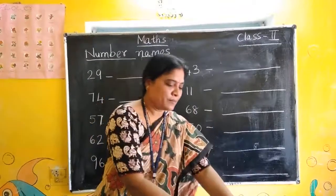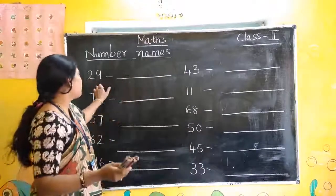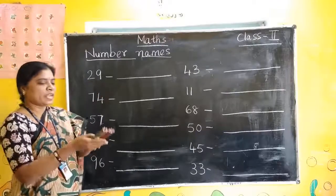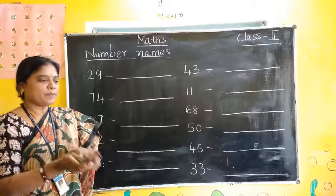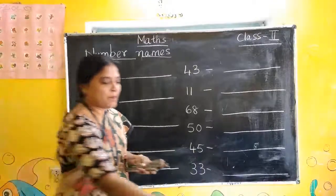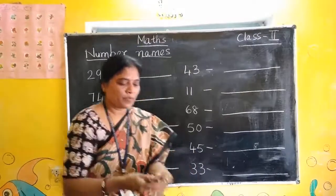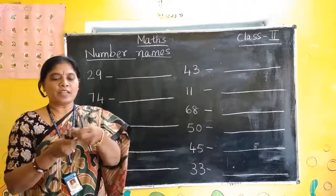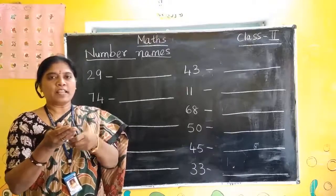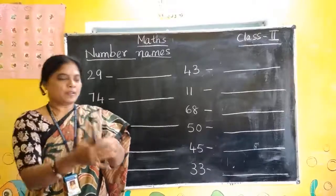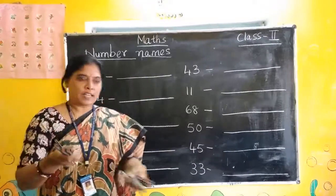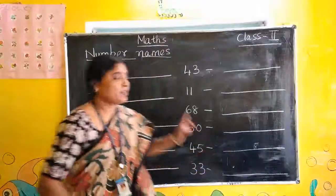Here look at the board. Some numbers. What is this number? 2, 9 — 29. So how many? 2 sets of 20, and 9 more pencils we have to take. 20 plus 9: count 1, 2, 3, 4, 5, 6, 7, 8, 9. So 10, 20 and 9 — that is 29. Like that you have to write.